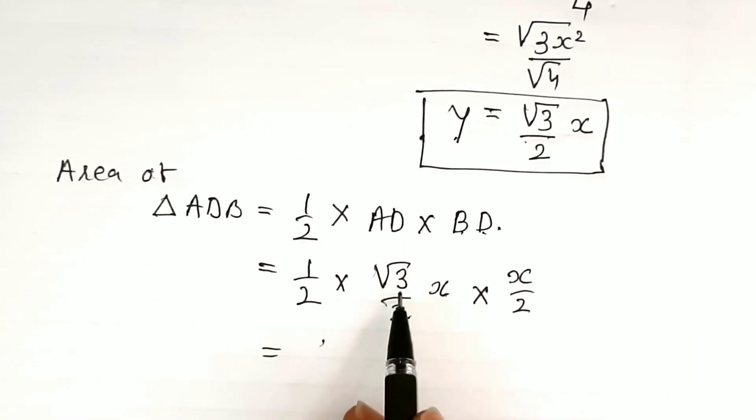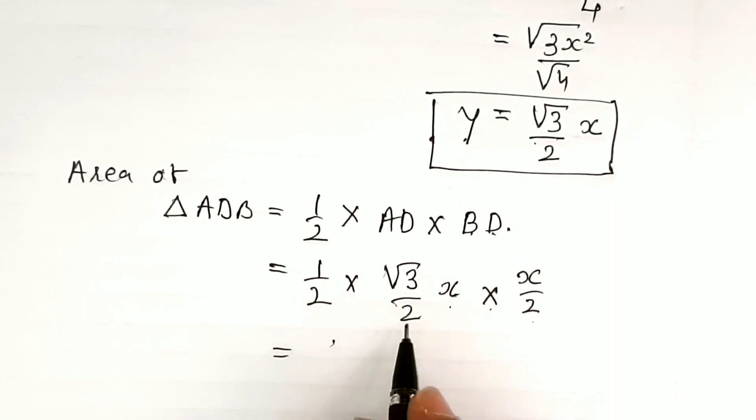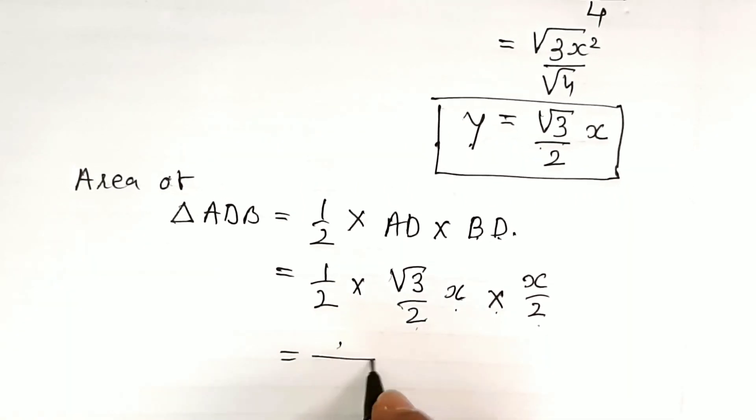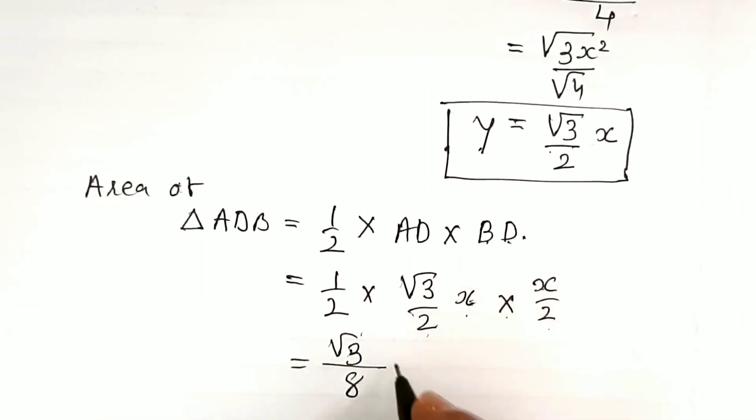When we multiply one half into the square root of 3 upon 2x into x by 2, we get the denominator as 8 and the numerator as the square root of 3 times x squared.